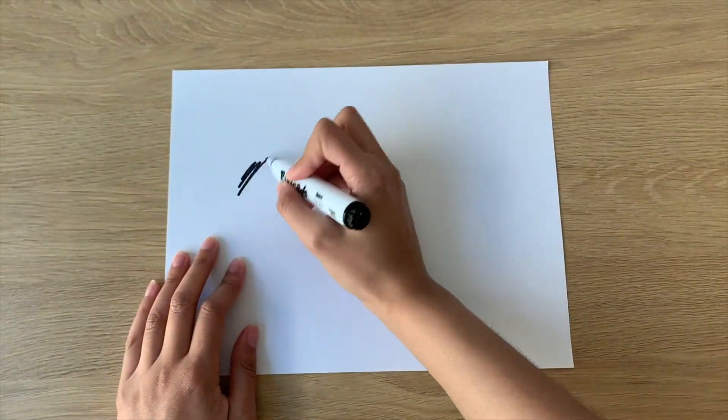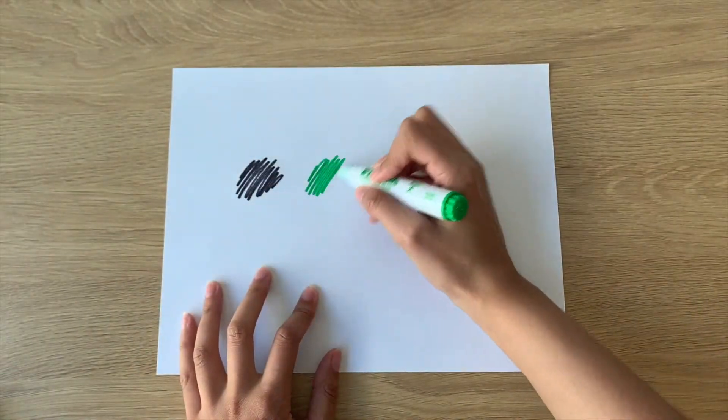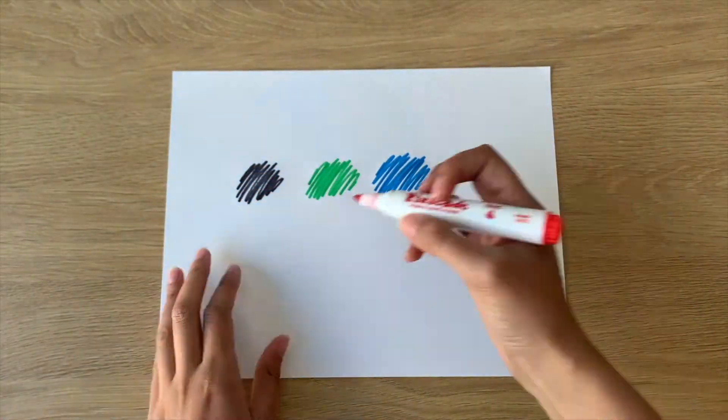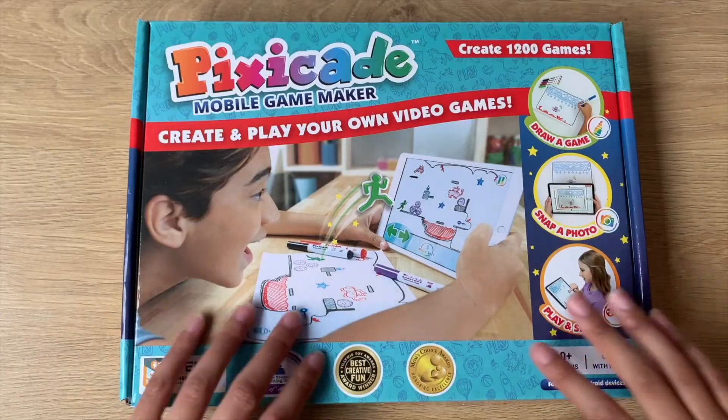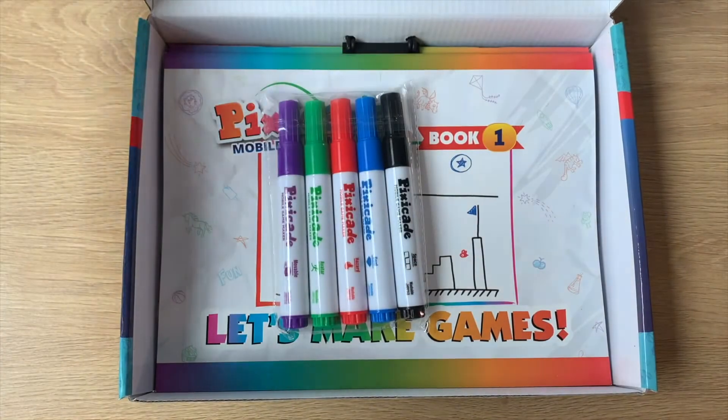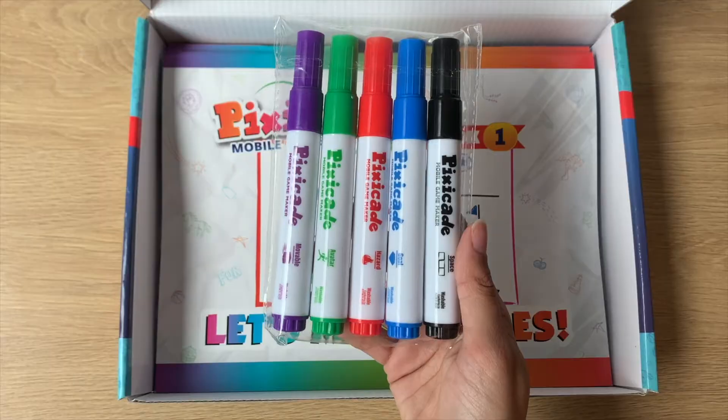We recommend using the Pixicade Mobile Game Maker markers because they are specially colored to work in the widest variety of lighting scenarios, so your photos come out just right. You can get Pixicade markers by buying the Pixicade Box Kit, or you can buy them individually on Amazon.